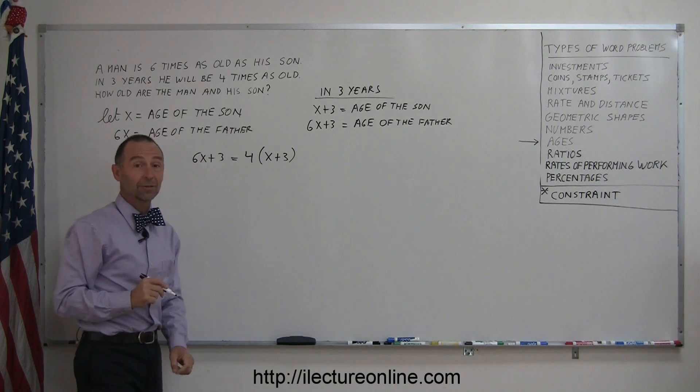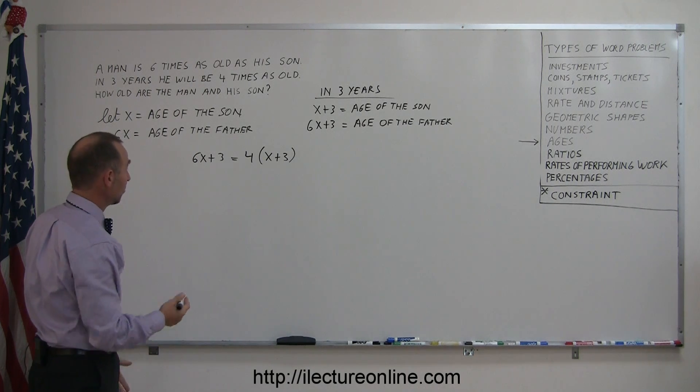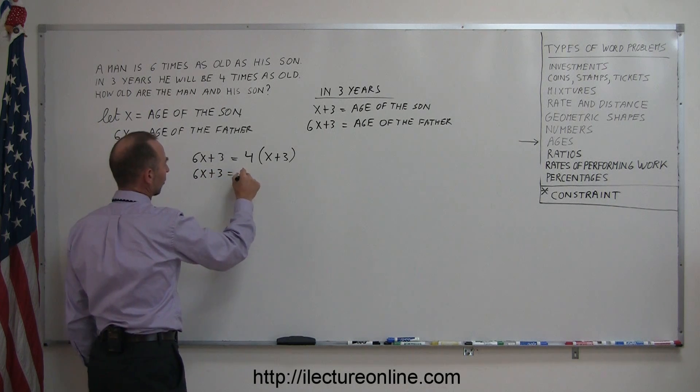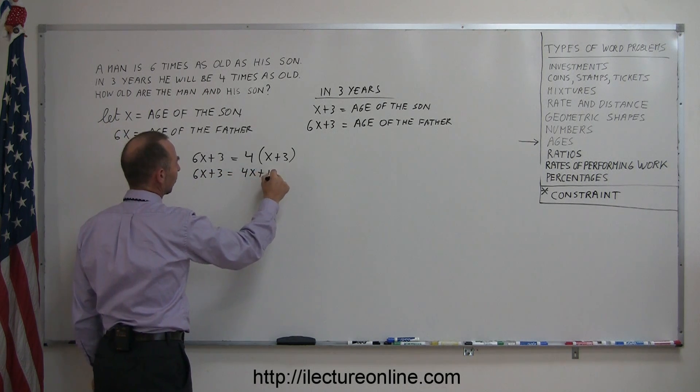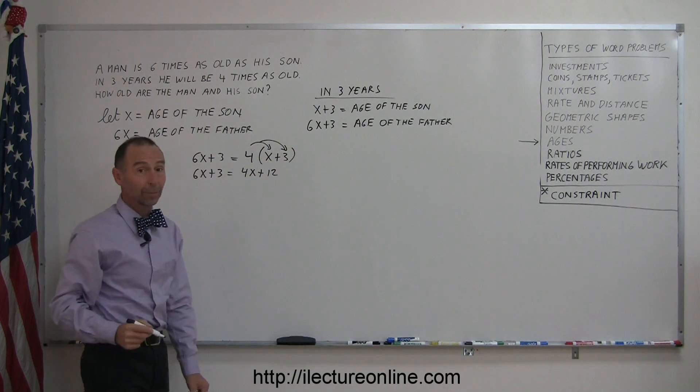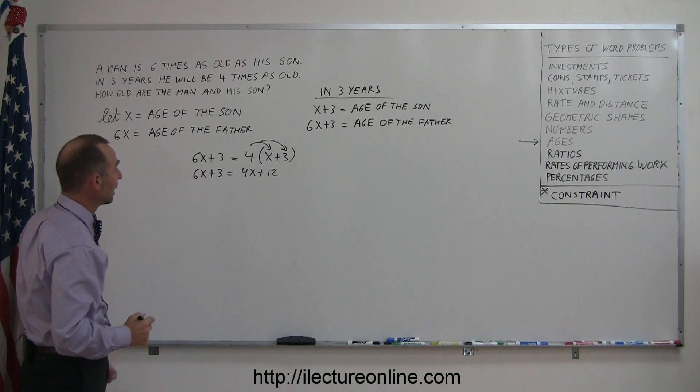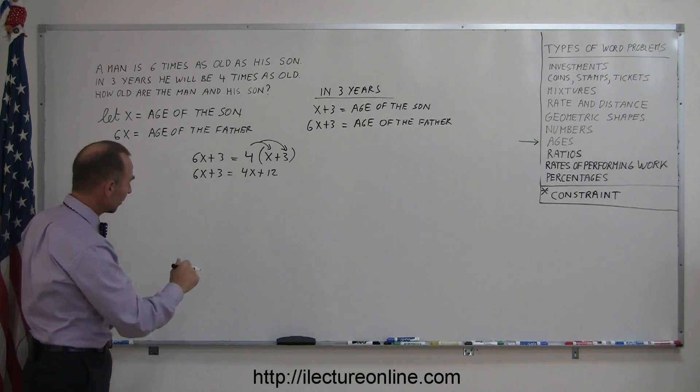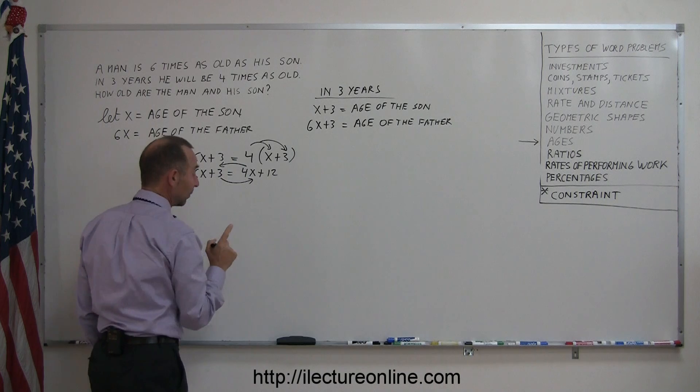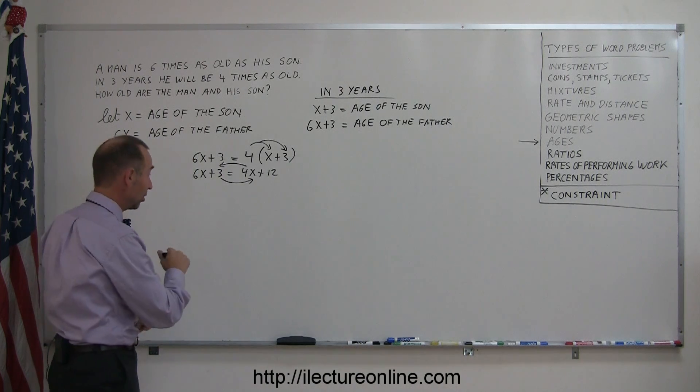Now we're ready to solve this equation. First thing is get rid of parentheses. So 6x plus 3 equals 4x plus 12. Remember, apply the 4 to both terms inside the parentheses. Now we move all the x's to one side, all the numbers to the other side. So the 4x goes here, the 3 goes there. Remember, when we cross the equal sign we want to change the sign.